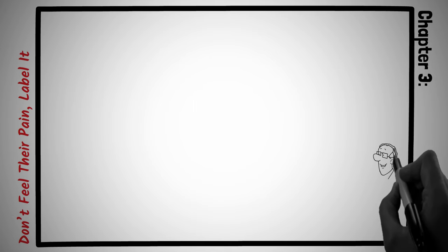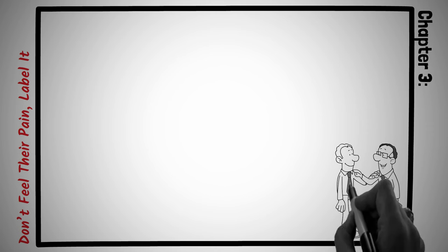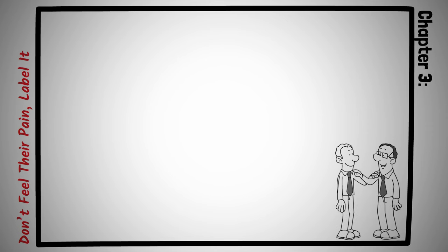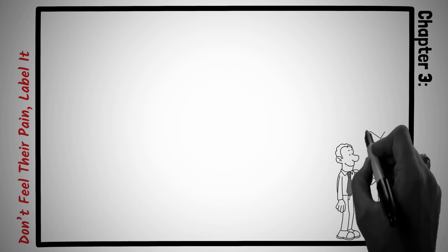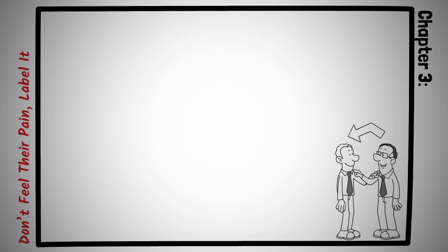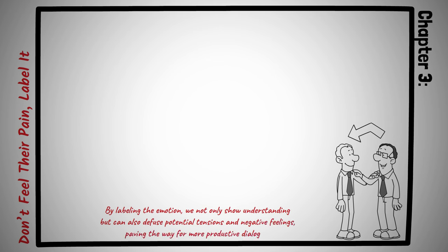Chapter three, don't feel their pain, label it. Empathy is a powerful tool in human interactions, but there's a fine line between immersing oneself in someone else's emotions and becoming overwhelmed. The chapter introduces a transformative approach. Rather than diving deep into another's emotional world, it's more effective to recognize and articulate those emotions. By labeling the emotion we not only show understanding, but can also diffuse potential tensions and negative feelings, paving the way for more productive dialogues.